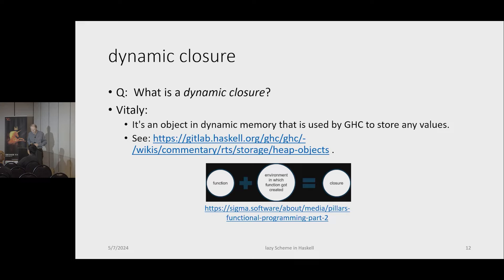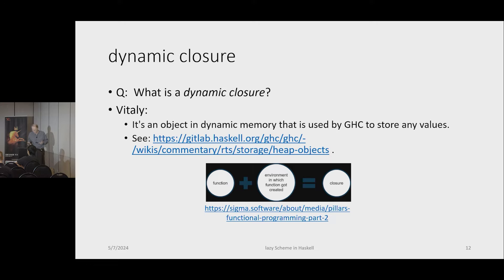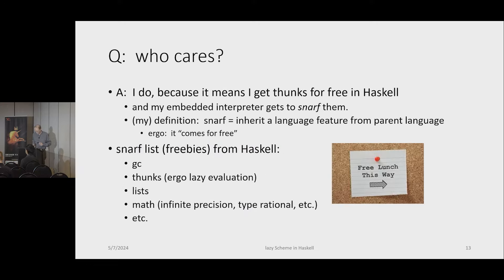Getting back to that quote from Vitaly about a dynamic closure — I'm an old-timer, I remember static versus dynamic scoping, which was a big issue in Lisp in the early days. I had a feeling that's not what he was talking about, and indeed it has nothing to do with that. He answered and said a dynamic closure in Haskell is an object in dynamic memory that GHC uses to store any values. I care about this because I want to know how much support I'm going to get from Haskell when I implement thunks. I can't get them completely for free, but I get a lot of support from Haskell for them.